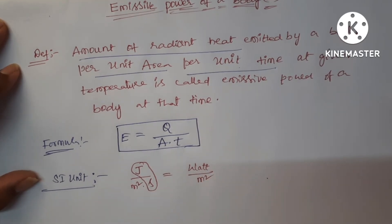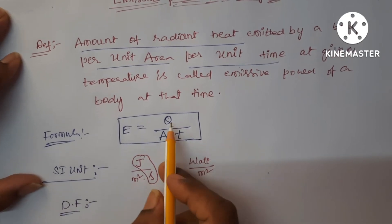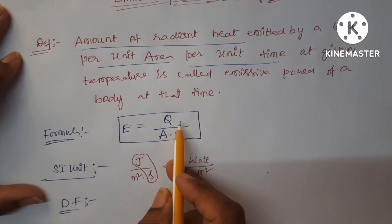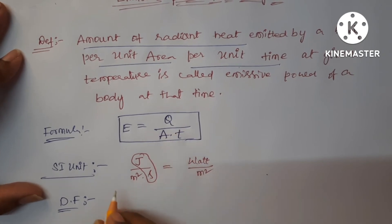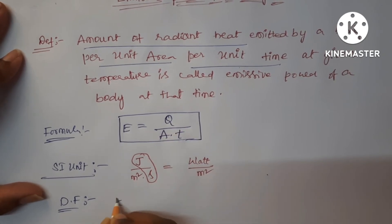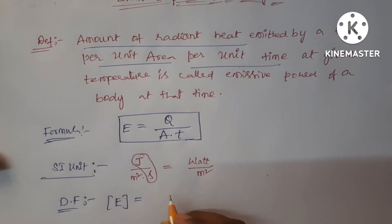Now let us write the dimensional formula of emissive power. Dimensional formula is, see here, Q is a form of energy, so we can write the dimensions of energy directly. If you want, I will give the link in the description box. I am writing the dimensions of heat energy: M, L square, and T power minus 2.